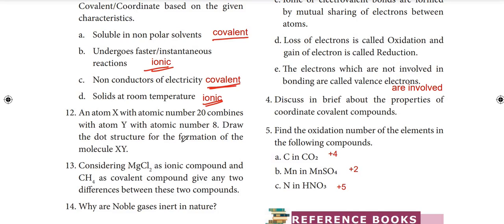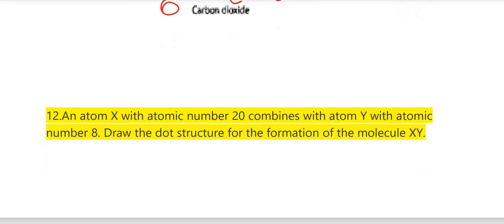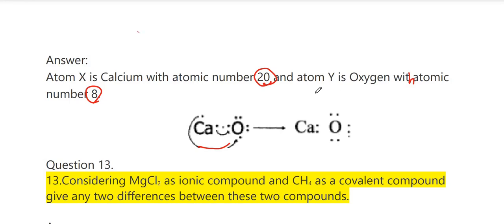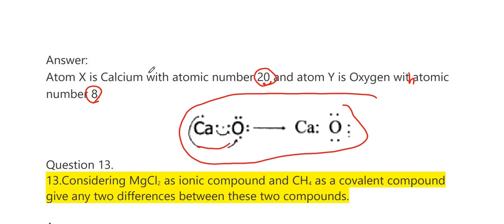Twelfth question: atom X with atomic number 20 combines with atom Y with atomic number 8 — draw the dot structure for the formation of molecule XY. Atom X is calcium (atomic number 20) and atom Y is oxygen (atomic number 8). Calcium transfers its 2 valence electrons to oxygen, forming CaO through ionic bonding.